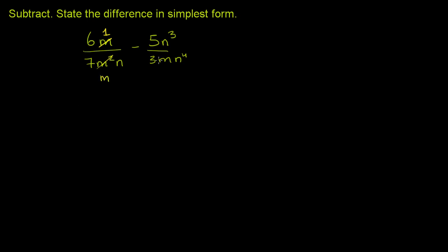The second term right over here, both the numerator and the denominator are divisible by n to the third power. So let's divide the numerator by n to the third power, you get a 1. Divide n to the fourth by n to the third power, you just get an n.